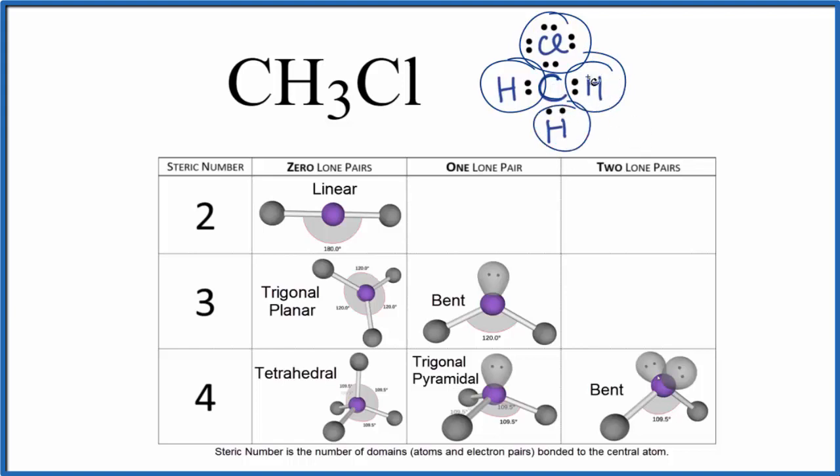So these four things, that's our steric number, one, two, three, four. We go down to four, and we don't have any lone pairs. We have what's called a tetrahedral molecular geometry. And these bond angles, they should be about 109.5 degrees.